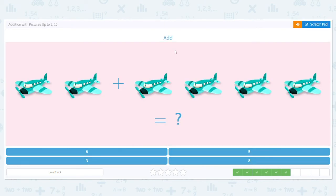Next one. Let's add. Again, I have 2 planes plus 4 planes. How many planes is that in all? Is it 6, 5, 8, or 3?